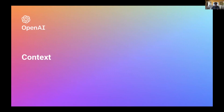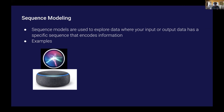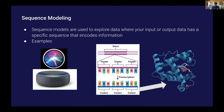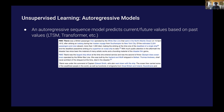Because our audience is really general, I wanted to give some context to my project. First I want to talk about sequence modeling. Sequence models are used to explore data where your input or output data has a particular sequence that encodes information. A common example is something like Siri, where you say 'Hey Siri, turn on the lights.' Or you can have an example like DeepMind's doing, where you're going from a DNA sequence to a folded protein. Another thing I want to introduce is the idea of unsupervised learning, particularly with autoregressive models. An autoregressive sequence model predicts current or future values based on past values. GPT-3 is one of OpenAI's popular language models, and the model I trained is really similar.